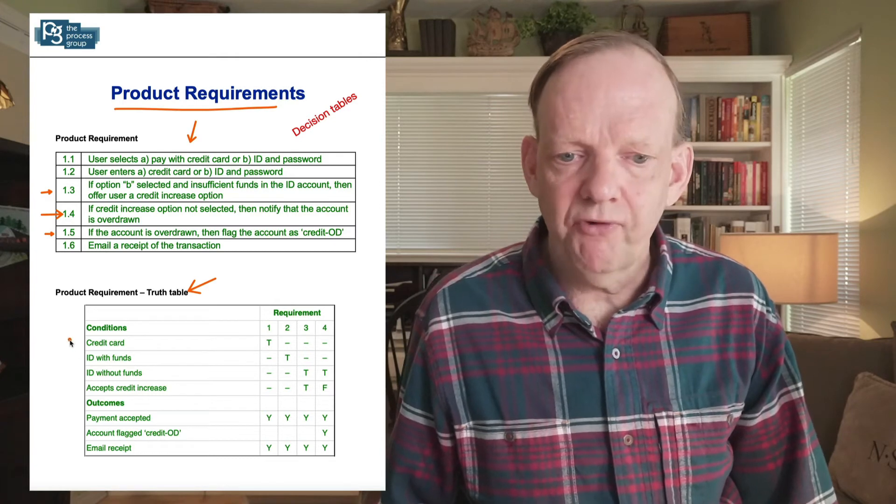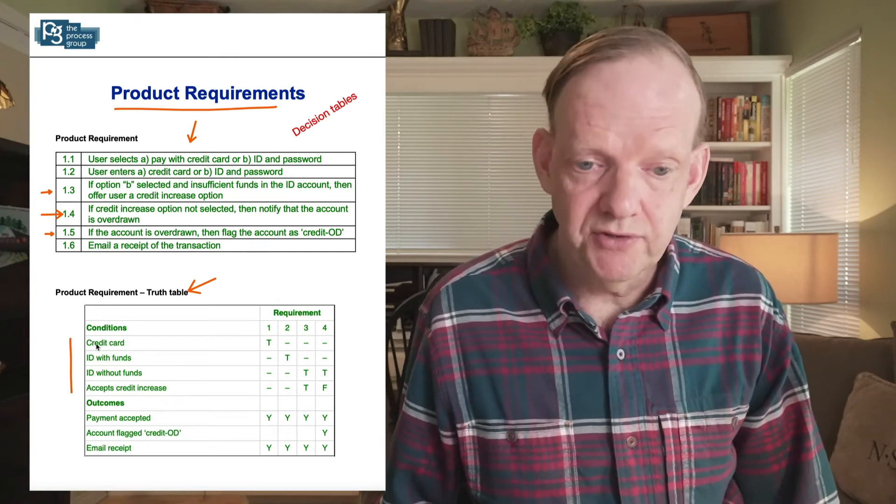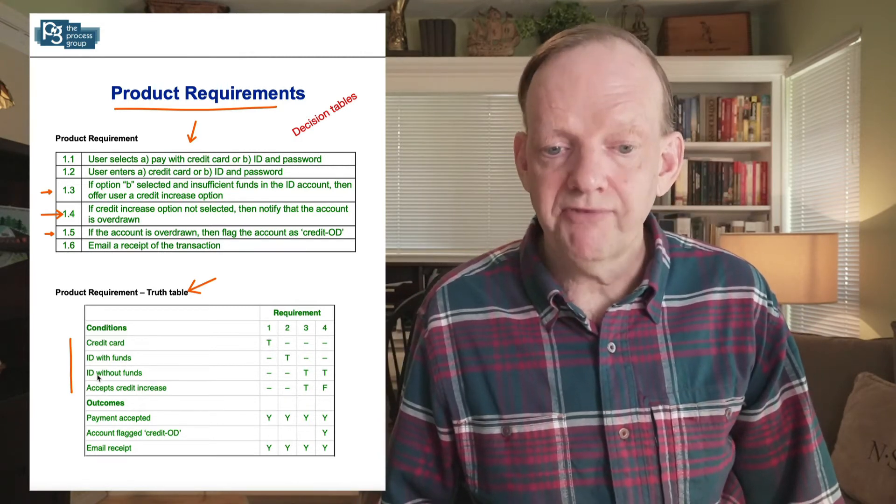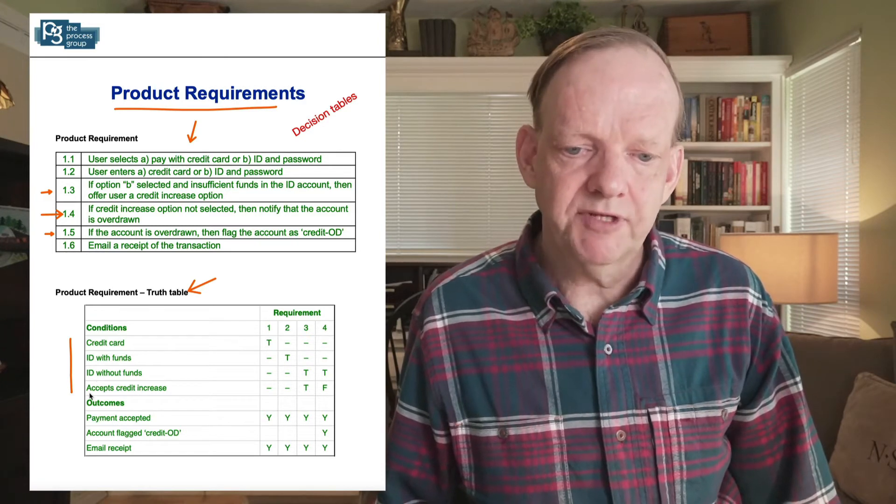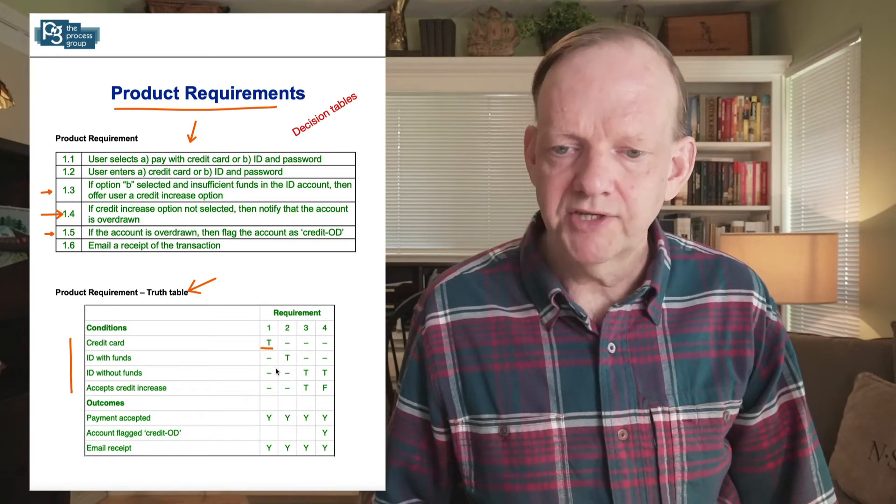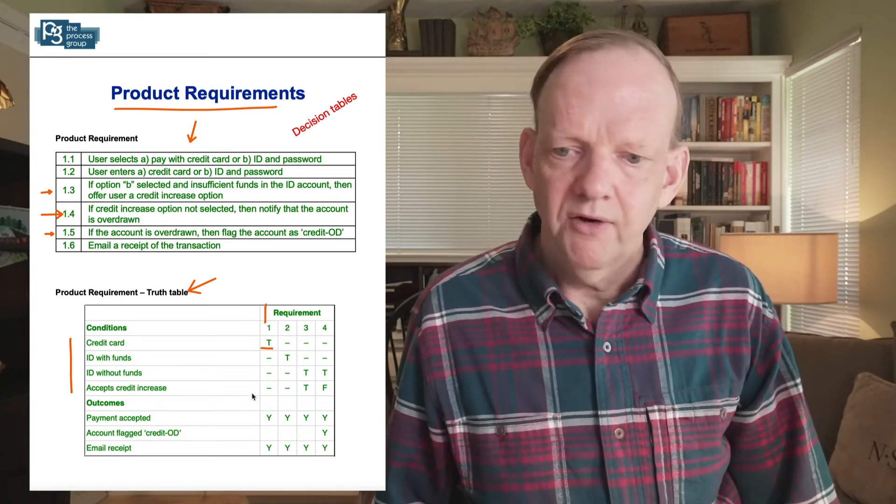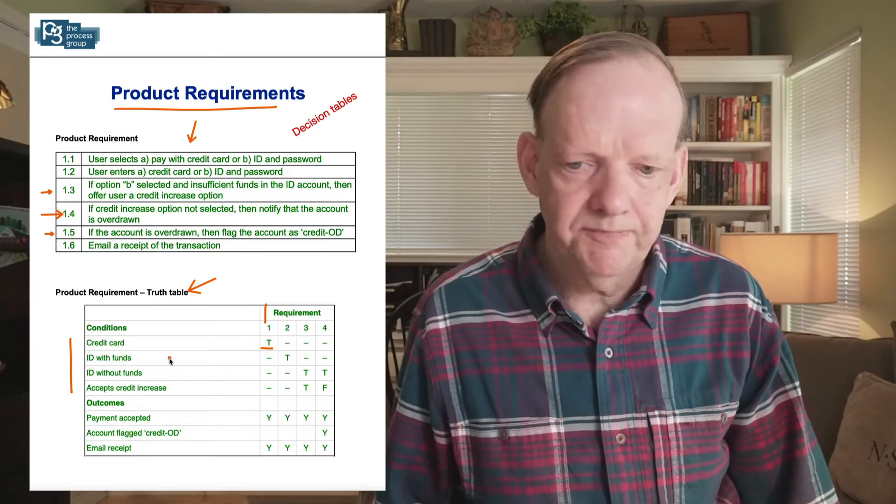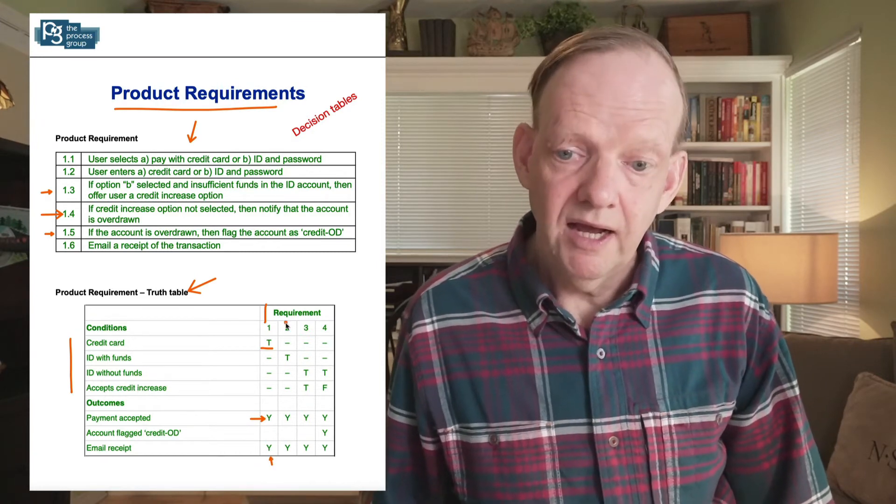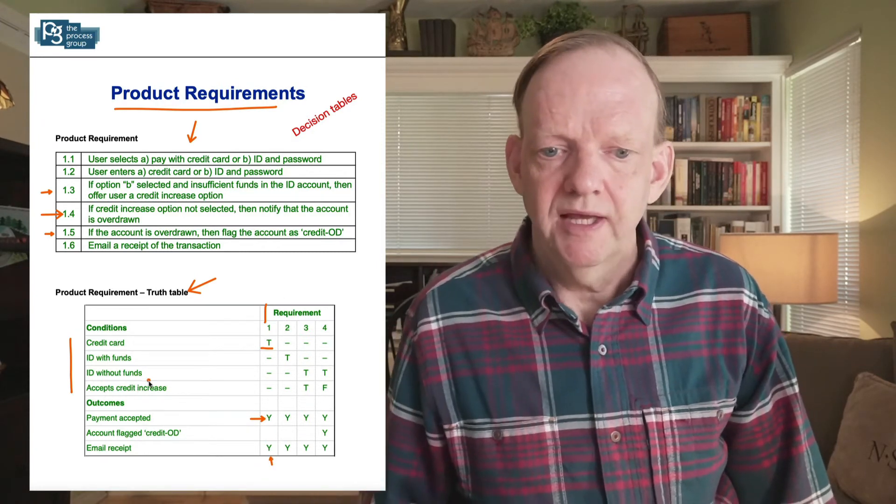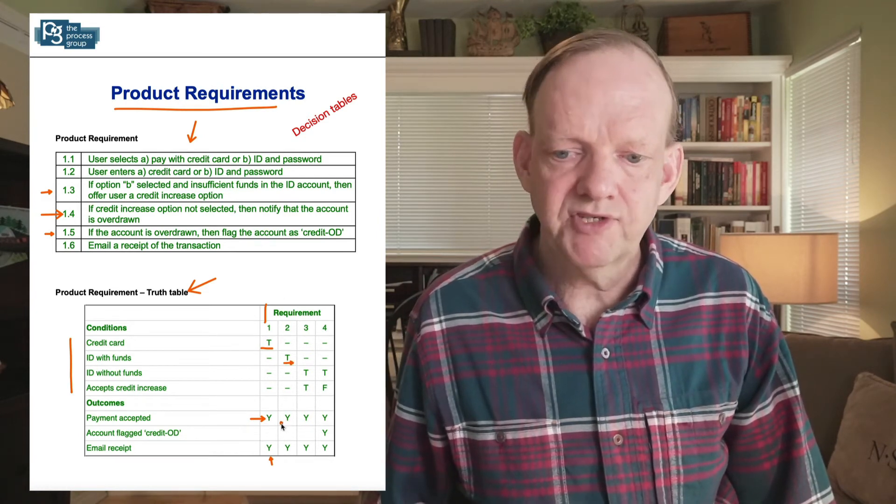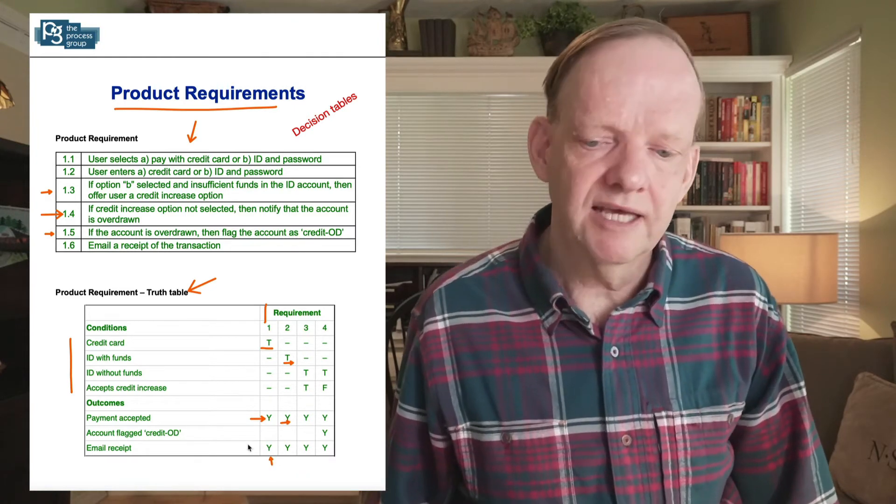So now we have these four conditions: a credit card is being used by the user, ID with funds that are logged into with an account that has money, ID without funds, and then accepts a credit increase on their account. And then we can put a truth symbol here for when that condition occurs. So requirement number one, we have credit card is used, and therefore we have the payment accepted and email receipt. Condition number two, or requirement number two, now we have ID with funds, so they're logging with an ID, that's true. And we have the same outcome, payment accepted and email receipt.